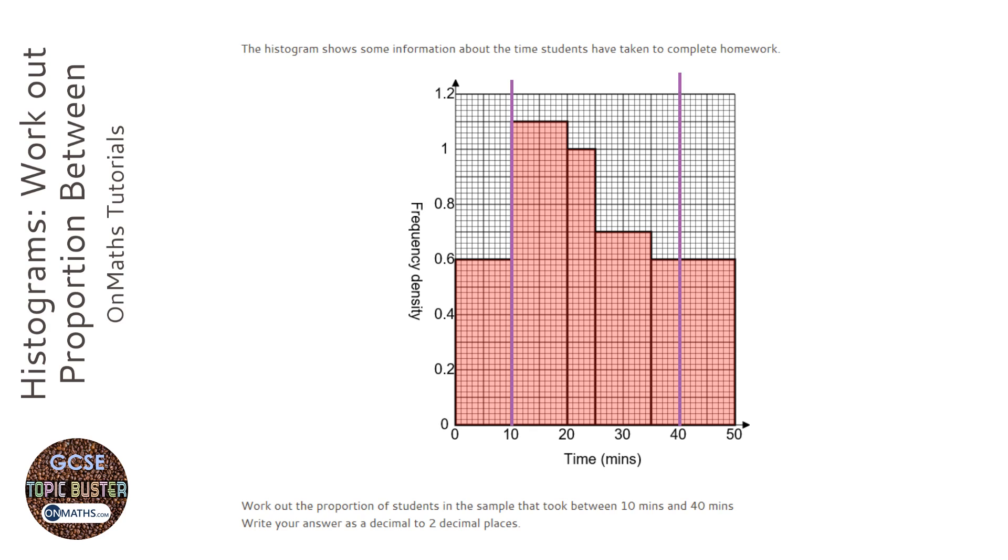So we need two things. We need to know, first of all, how many big squares, and we might as well count big squares, there are between those two, 10 and 40. And we need to know how many there are in total. So let's just have a count.